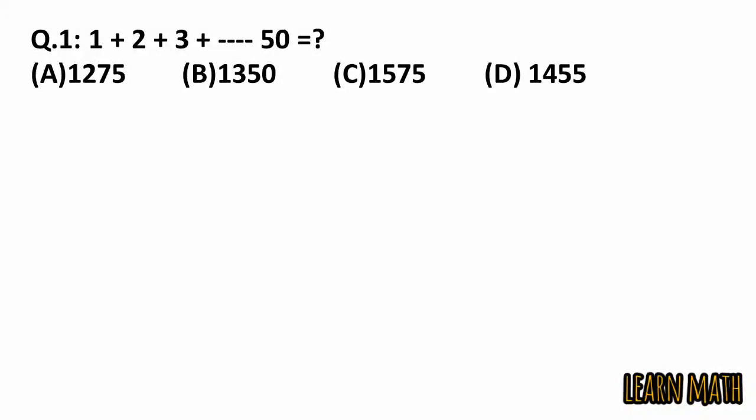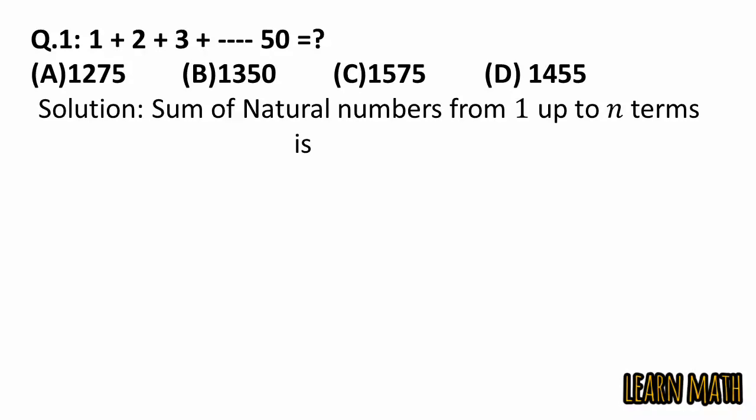The first question is 1 plus 2 plus 3 up to 50 is equal to what? Four options are given. As we know that sum of natural numbers from 1 up to n terms is n into n plus 1 divided by 2.